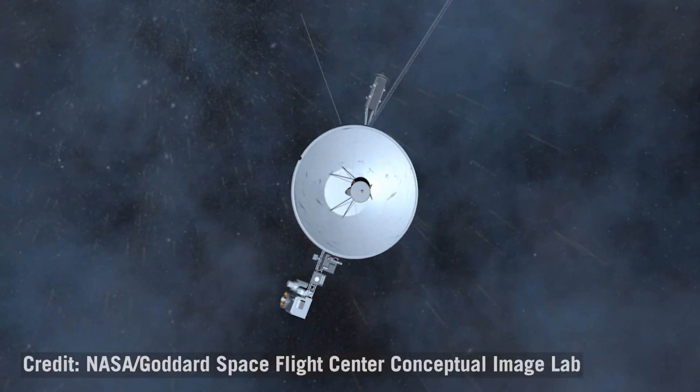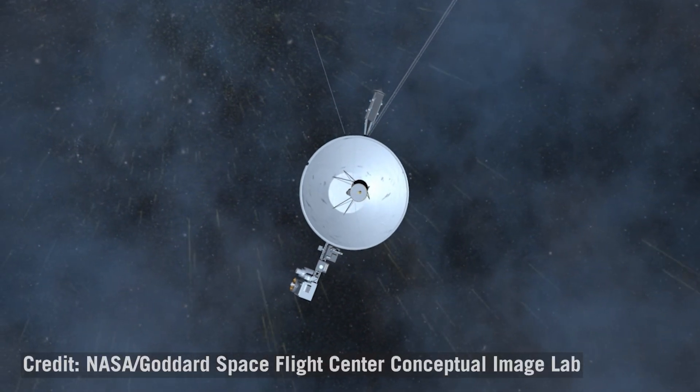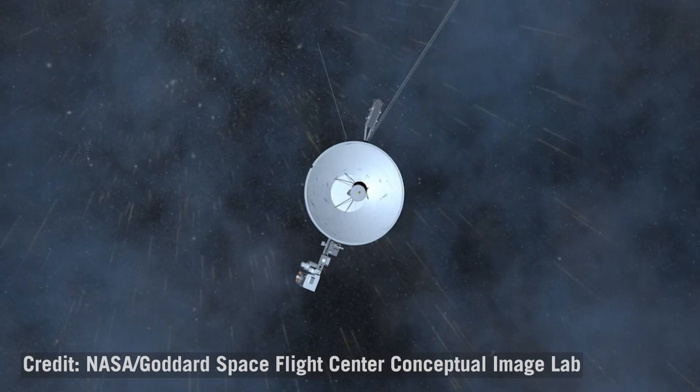In scenarios like this, people often invoke Occam's Razor, which is: the simplest explanation is usually the right explanation. If you don't want to accept Occam's Razor, we've also sent a probe all the way to the edge of the solar system, and we're very sure.